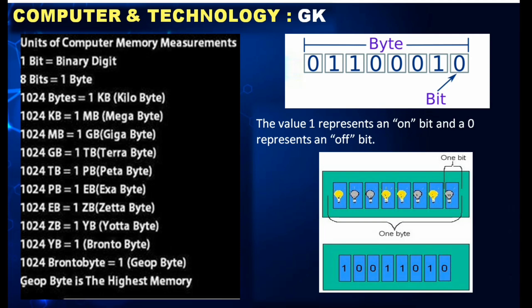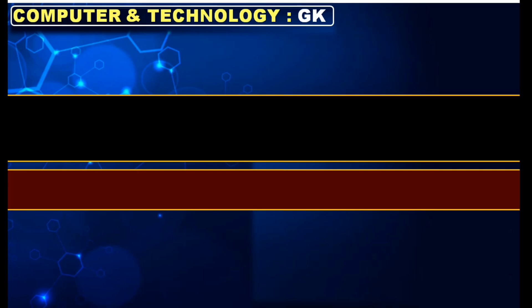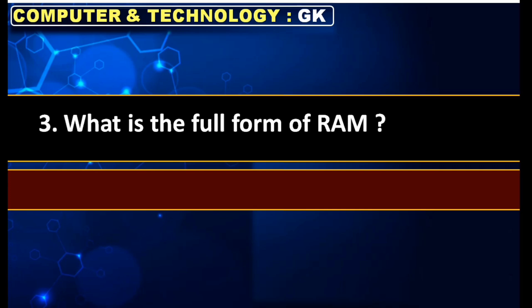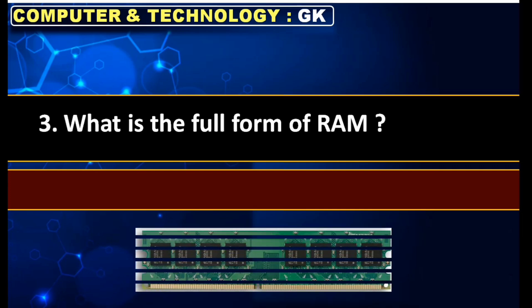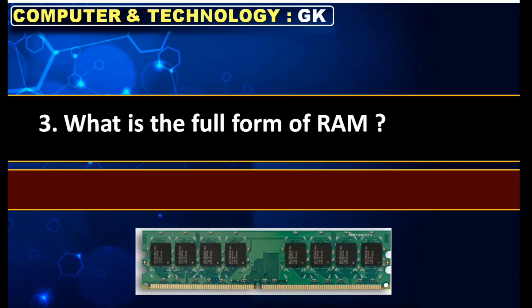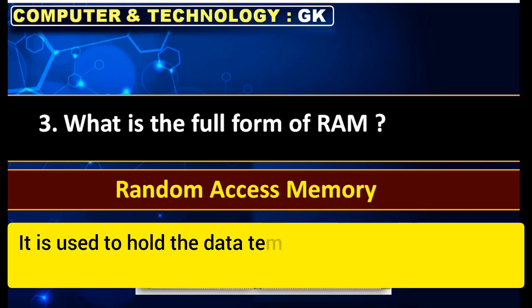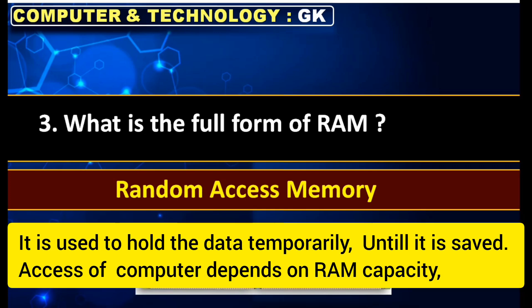One thousand twenty four bytes is equal to one KB, that is one kilobyte. Likewise, one thousand twenty four KB is equal to one megabyte. What is the full form of RAM? RAM: Random Access Memory.